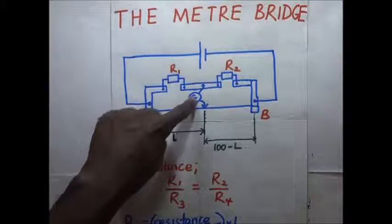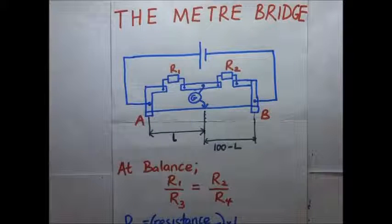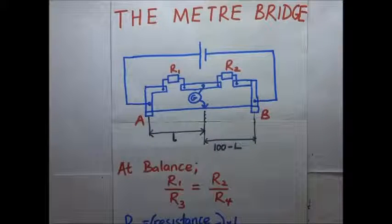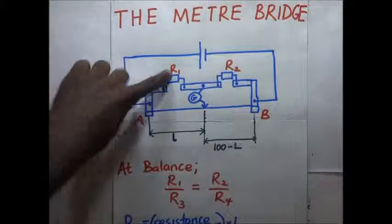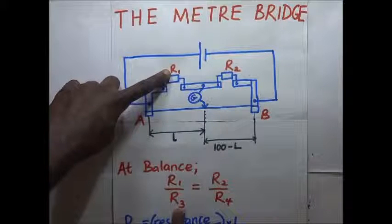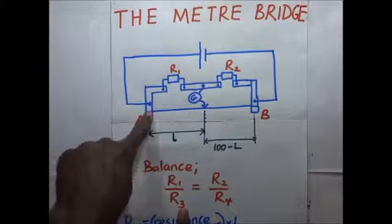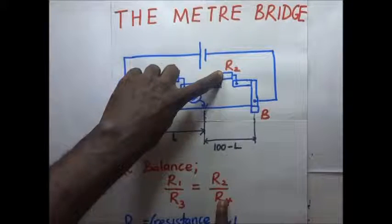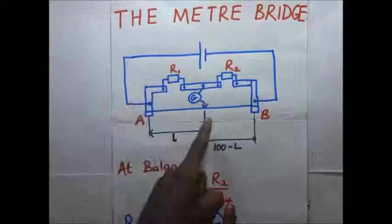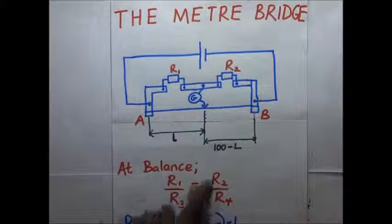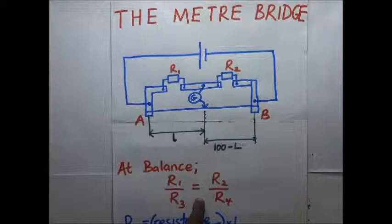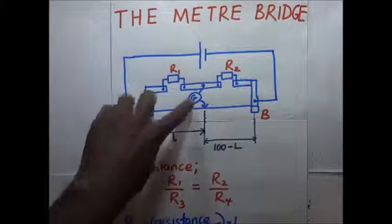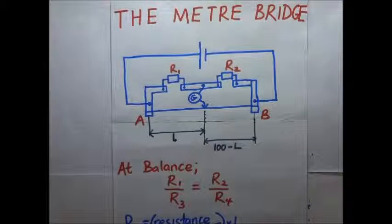The point at which galvanometer G is not deflecting at all is what we call the balance condition of the meter bridge, just like with the Wheatstone bridge. So at balance, R1 divided by R3 — the resistance of the wire from here to there — should be equal to R2 divided by R4, the resistance of the remaining wire. This condition is only satisfied at the balance point, when the galvanometer indicates zero deflection.